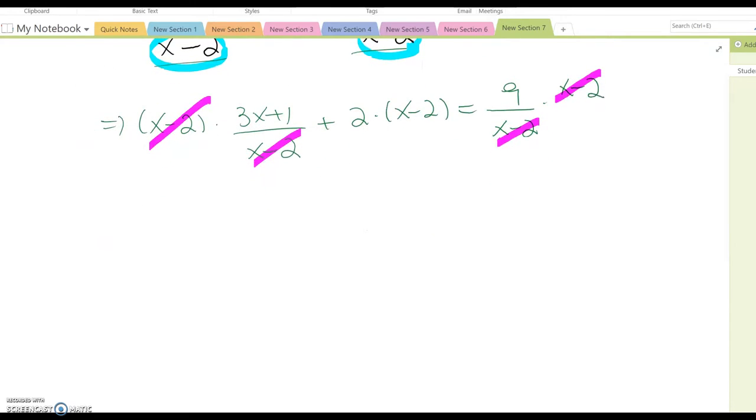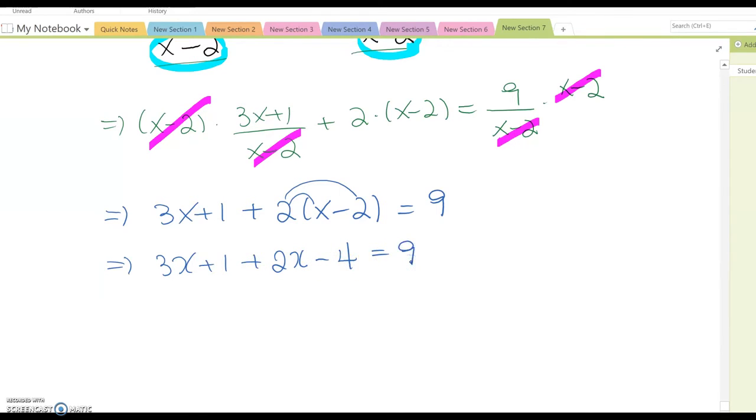This equation becomes 3x plus 1 plus 2x minus 4 equal to 9. You distribute, then this becomes 3x plus 1 plus 2x minus 4 equal to 9. Combine like terms, then this becomes 5x minus 3 equal to 9.